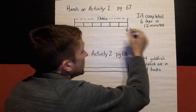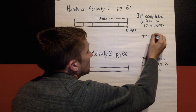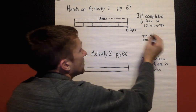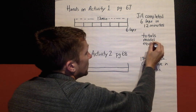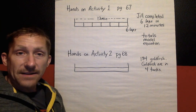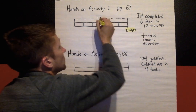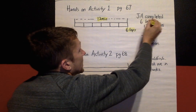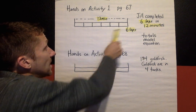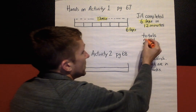So I'm going to write down the three things you should be focusing on for each problem. Again, it's the totals, the model — how are you going to model the information — and also the equation. In the first problem, Jill completed six laps in 12 minutes. Here are my totals: 12 minutes, six laps — I get that right from the text, the ratio. The model is this bar, and I divided it into six laps. Each section represents one lap.